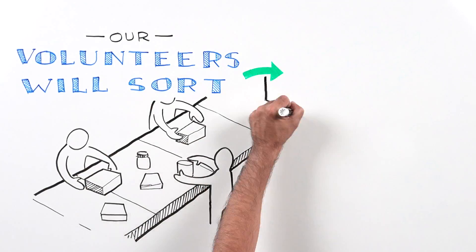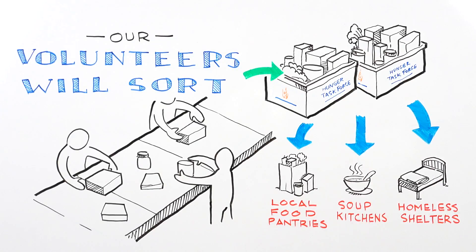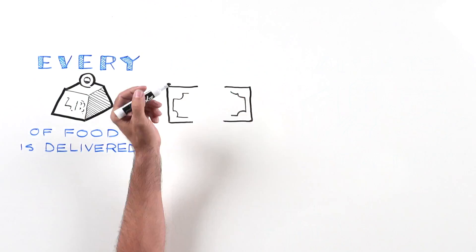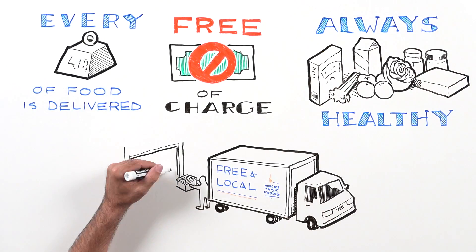Volunteers will sort the food at our food bank and get it ready for delivery to local food pantries, soup kitchens, and homeless shelters. Every pound of food is delivered absolutely free of charge. Food is always healthy and served to families with dignity.